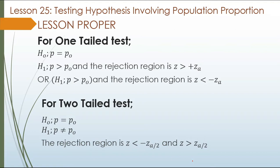For one-tail test: the null hypothesis is p equals p-sub-o. The alternative hypothesis, p is greater than p-sub-o, and the rejection region is z greater than the positive z value. Or the alternative hypothesis p is less than p-sub-o, and the rejection region is z less than the negative z value.